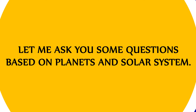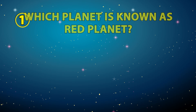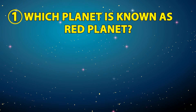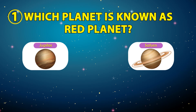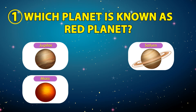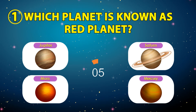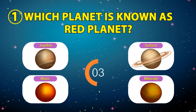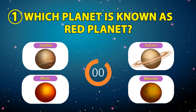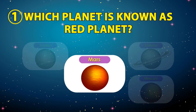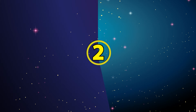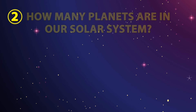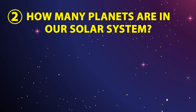Let me ask you some questions based on planets and the solar system. Number one: which planet is known as the red planet? The options are Jupiter, Saturn, Mars, or Mercury. The correct answer is Mars. Number two: how many planets are in our solar system?